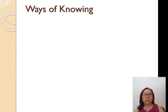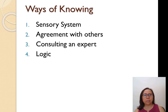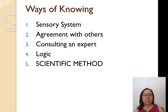There are five different ways of knowing something: sensory system, agreement with others, consulting an expert, logic, and scientific method. Scientific method is emphasized in caps, and that's where we want to spend most of the time — leading into why we look at data and talk about data analysis.